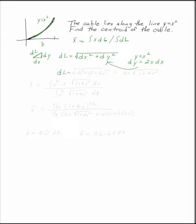dl is now the square root of dx squared plus 2x dx squared, which is, you can pull the dx out of the equation, 1 plus 4x squared. Now I can plug into my formula for the centroid of the line.